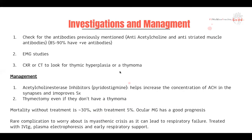In terms of investigations, testing for antibodies is really important and is the one investigation you should never forget for myasthenia gravis if you suspect it. The two antibodies are the anti-acetylcholine receptor antibody and the anti-striated muscle antibody, and 85 to 90% of patients have a positive antibody test. Interestingly, if the patient also has a thymoma, that number goes from 85-90% to almost 100% for antibody positivity.